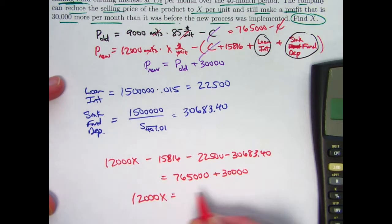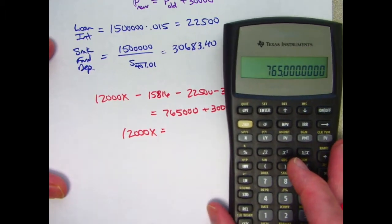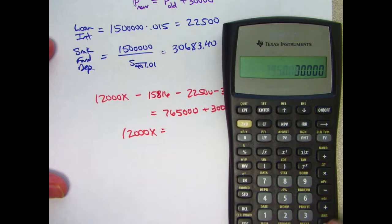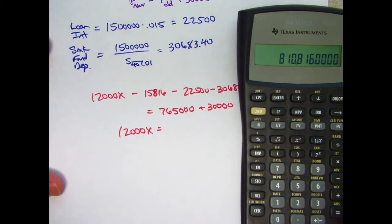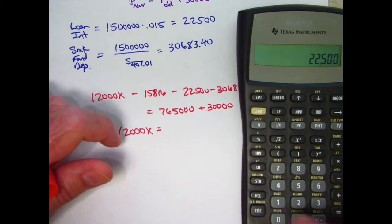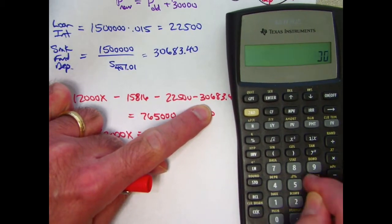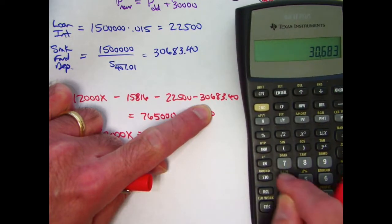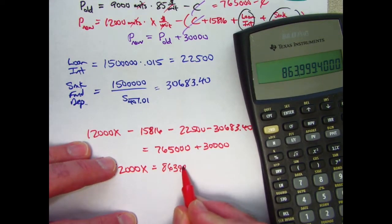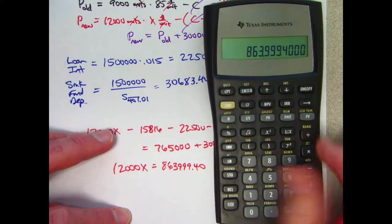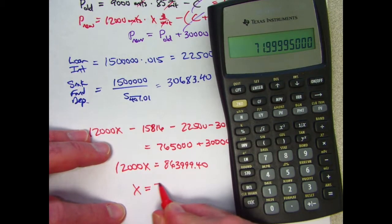12,000X will be this plus this plus all of these. So $765,000 plus $30,000 plus $15,816 plus $22,500 plus the final thing to add is this $30,683.40. So $863,999.40. Divide that by 12,000 and we will be done. X, if you round, is $72.00.